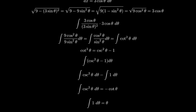So the integral becomes negative cotangent theta minus theta plus C, where C is our constant of integration.